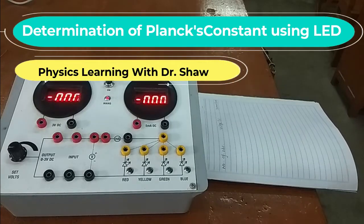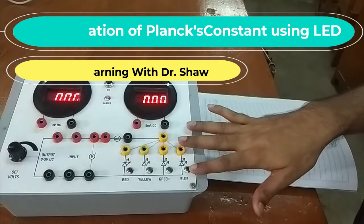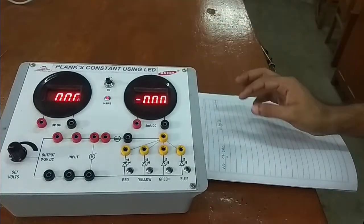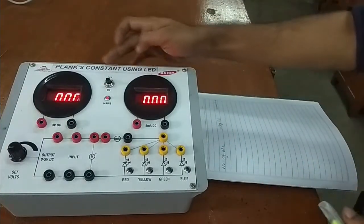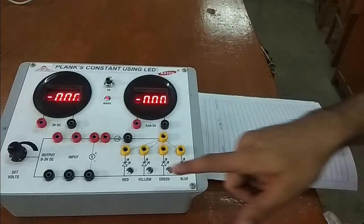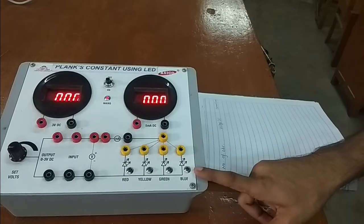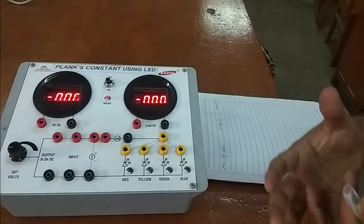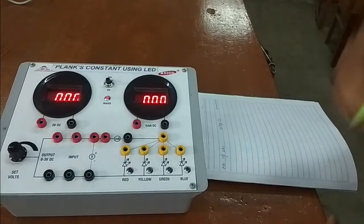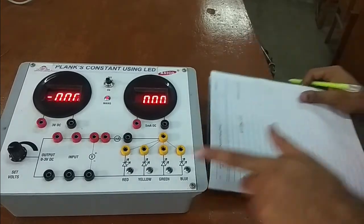Welcome, in this video I am going to demonstrate an experiment for measurement of Planck constant using LED. The question is how we can find out Planck constant. To find out the Planck constant we need to find out the knee voltage of the given LEDs, and to find out knee voltage we need to draw the IV characteristics of the given LEDs.